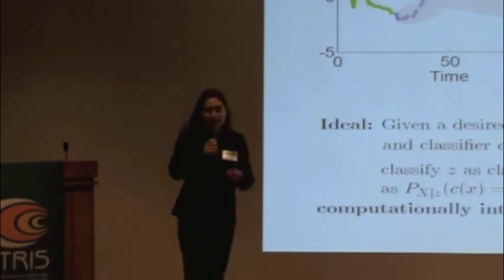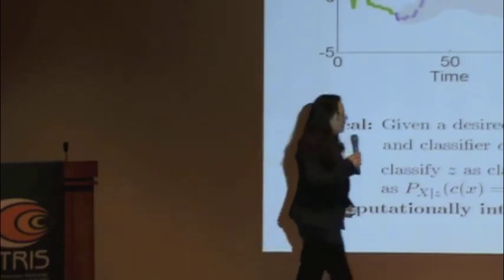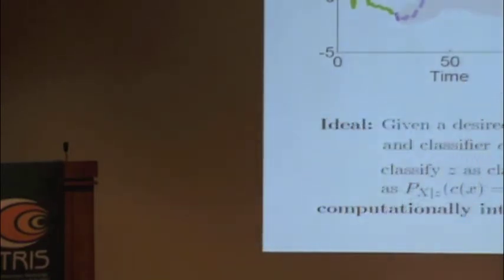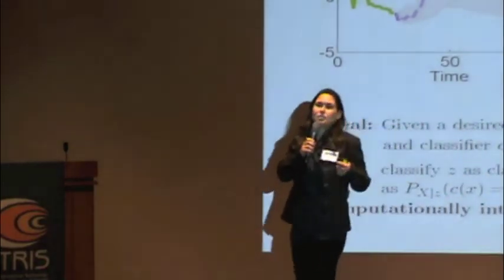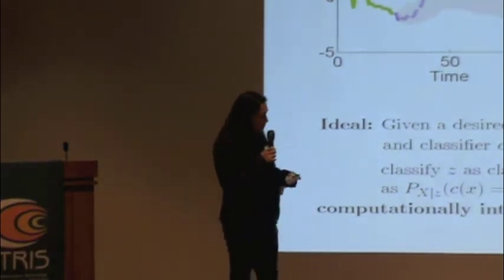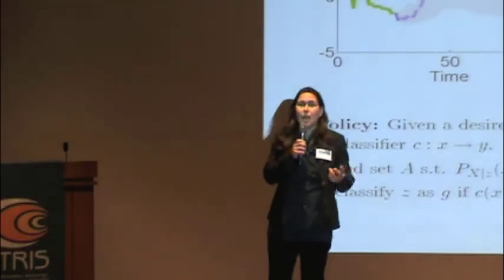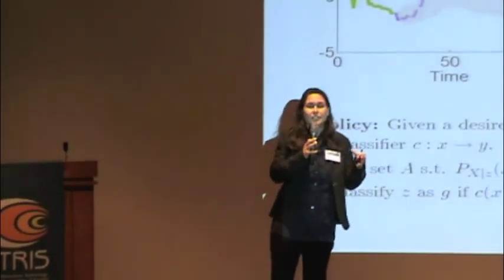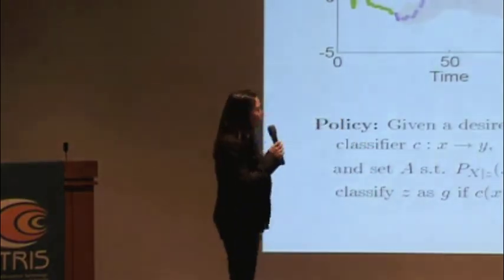This is a great idea — what we'd like to be able to do — but it's computationally intractable. The problem is you need to know this distribution, and even if you did, you'd have to check whether there's any set of measure tau that lies on one side of the decision boundary. So it's difficult to actually implement.